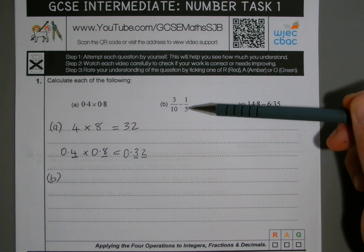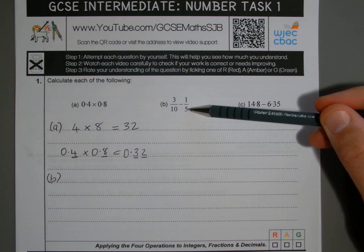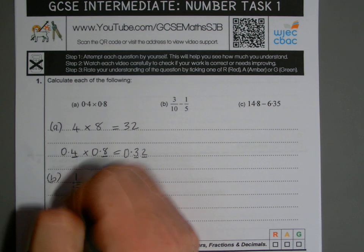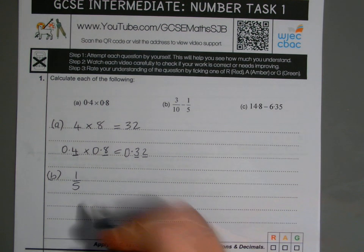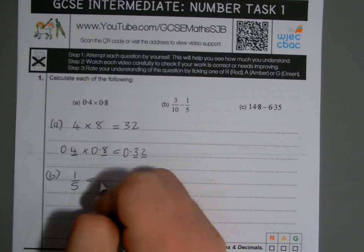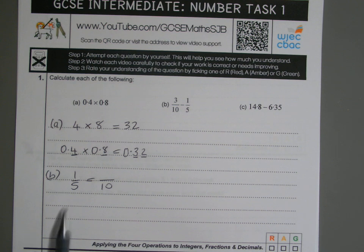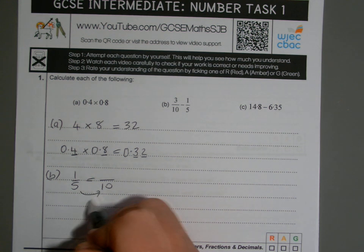One of the fractions we can change, and then we can do the subtraction. If you look at that second fraction there, I can change that 5 so it becomes a 10. So let's just write that fraction down, 1 fifth. Let's not worry about the minus in front of it for a minute. Let's just look at the 1 fifth. Let's change it so we have 10 on the bottom. So you've got to ask yourself, what am I doing to the 5 to get to 10? Well, of course, I'm doubling it.